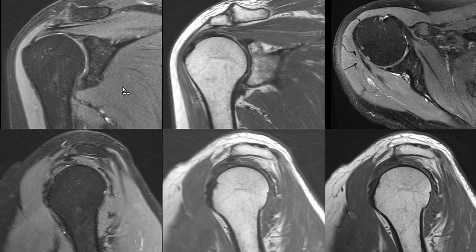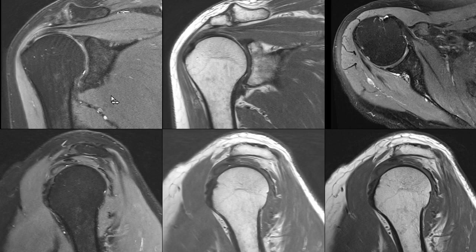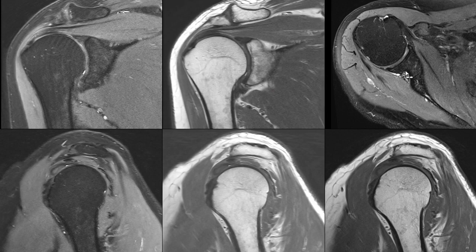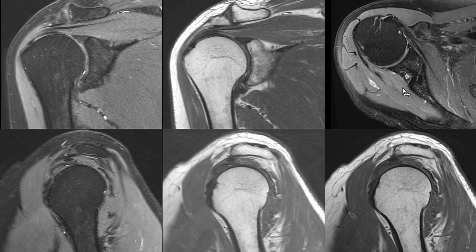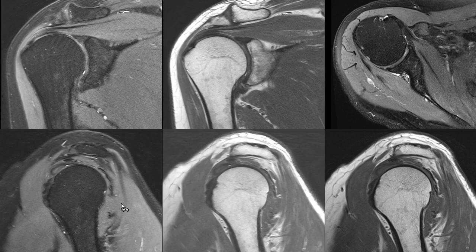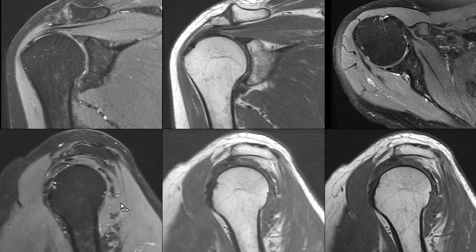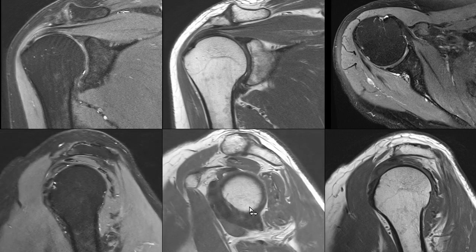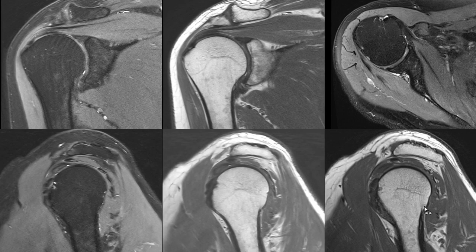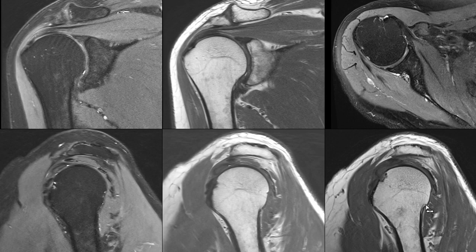A brief overview of his examination. We have here a PD fat-saturated coronal oblique sequence and a corresponding non-fat-saturated image. We have here a transverse PD fat-saturated sequence. We have here a sagittal oblique PD fat-saturated image and the corresponding non-fat-saturated sequence, and we have a T1-weighted sequence also in sagittal oblique.